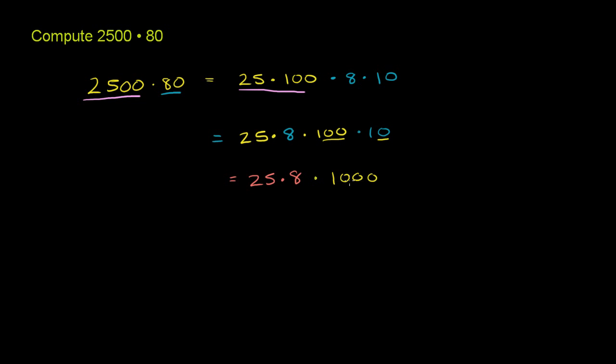And when we multiply this times whatever this is, we'll literally just add three zeros to the product. So that's why this is useful. We can now think about this as 25 times 8, and then whatever 25 times 8 is, we can add three zeros to it. And hopefully this explained a little bit about why.